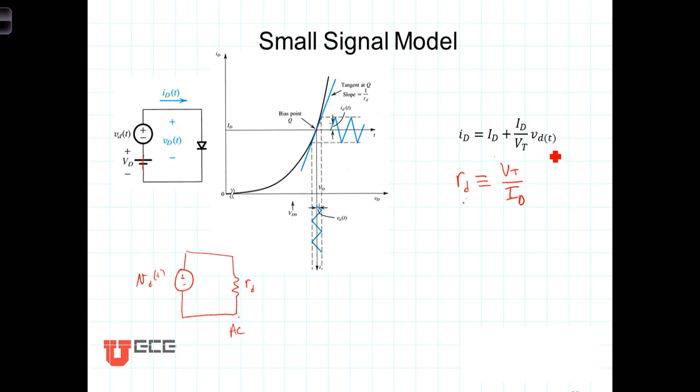This approach of biasing a device into a region of approximate linearity and then creating a small signal model to determine the small signal response is remarkably powerful. We will use this with transistor amplifier circuits extensively to take what is otherwise a very non-linear device and, again restricting ourselves to a linear portion of the response, then create linear amplifiers in the process.